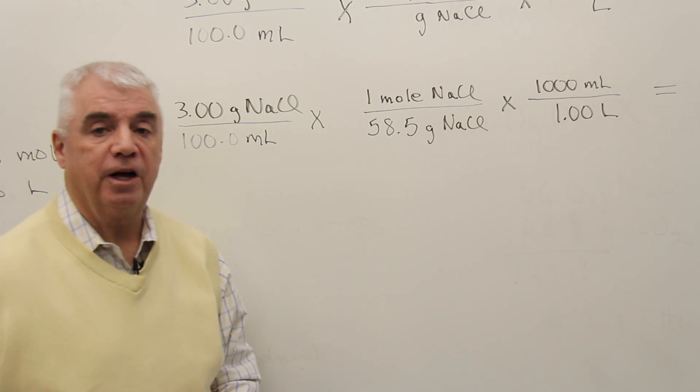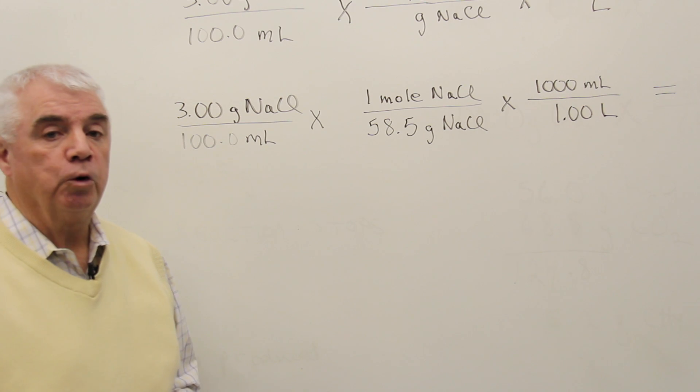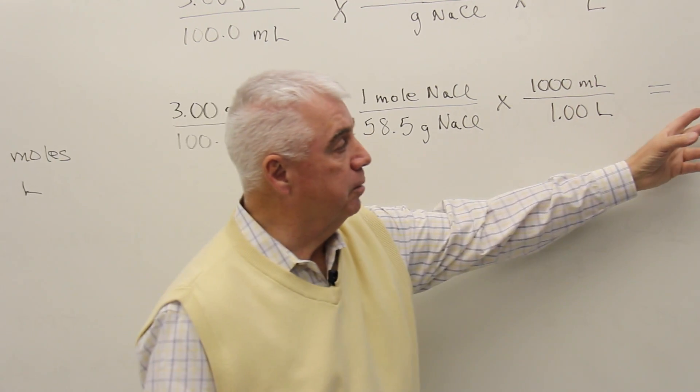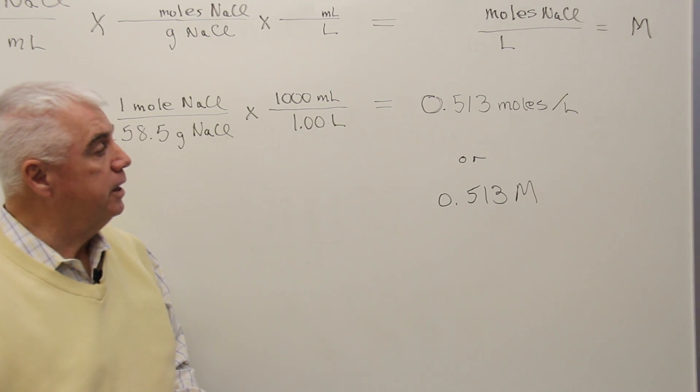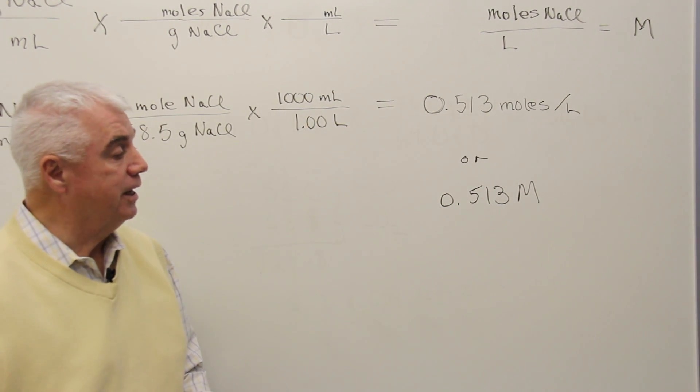So now we've got it set up so that the unit comes out right. We'd multiply the numerators, divide by the denominators, the answer comes up to be 0.513 moles per liter, or 0.513 M.